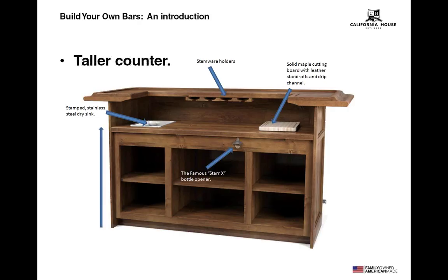Another design change is the bartender counter, which has been raised two inches to provide a better bartender working height as well as more space below the counter for storage. We have also added a four-inch wide top frame for lateral rigidity. The four-inch wide top frame allows us to hang the Star X bottle opener in an appropriate location and also hides the bottom of the stainless steel dry sink. All bars in the BYOB program are manufactured to these specifications — all NAPA, Marin, and Rutherford bars will look identical from the bartender side. The only details that will separate one collection from the other are the moldings, panels, and trim pieces applied to the front of the bar.